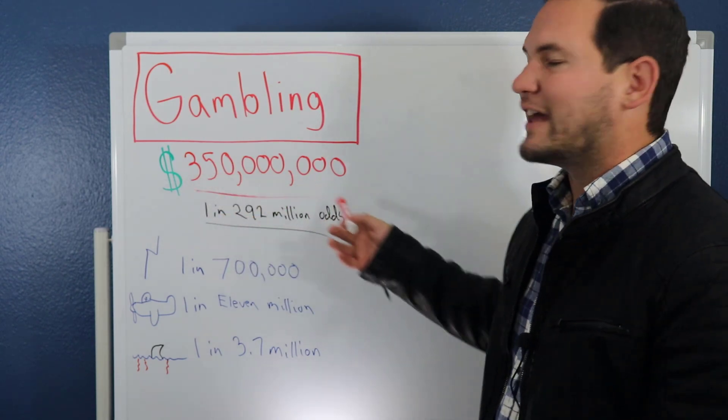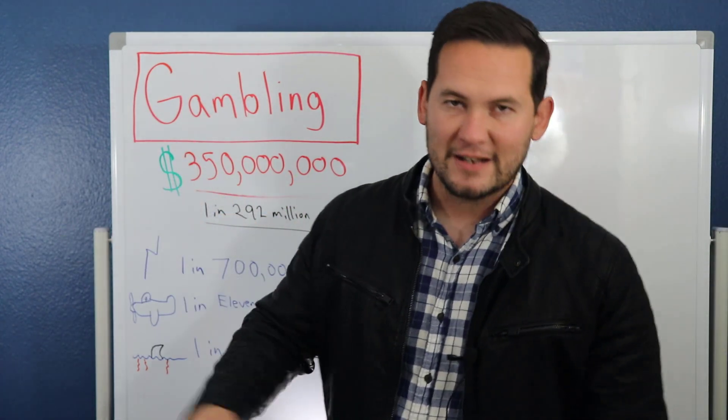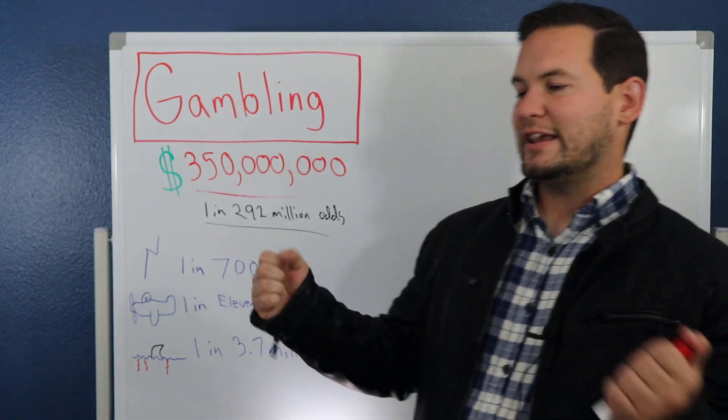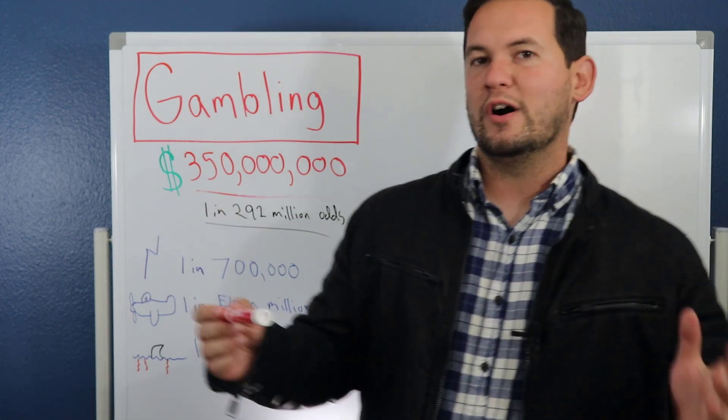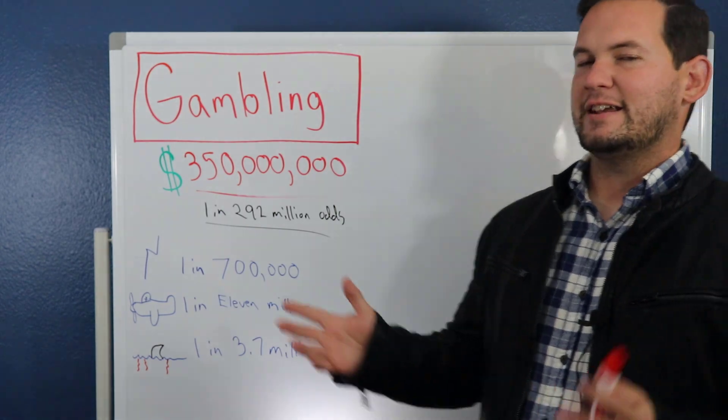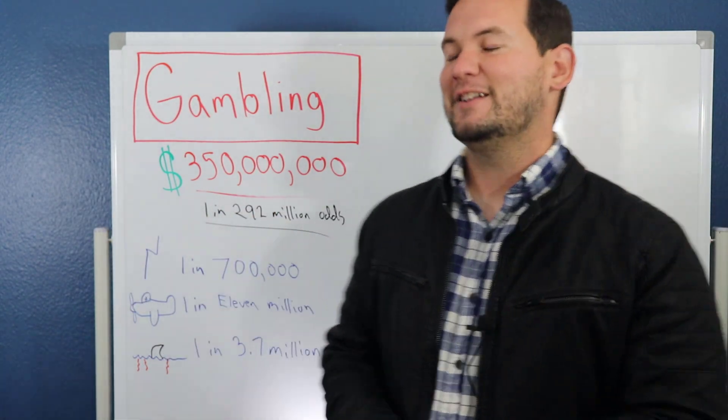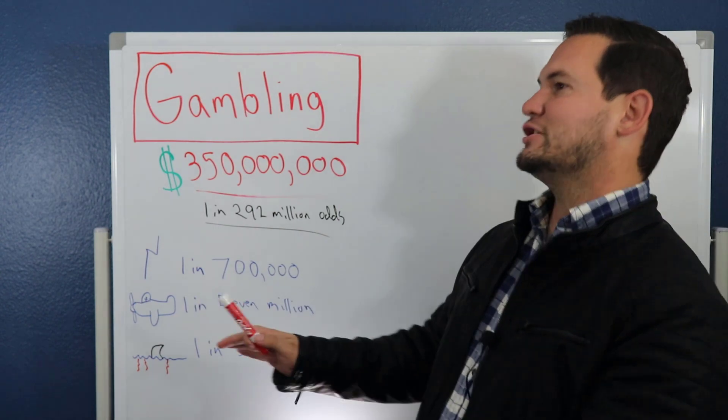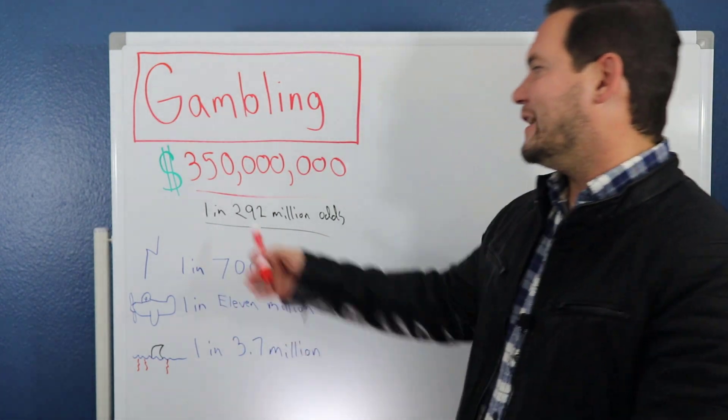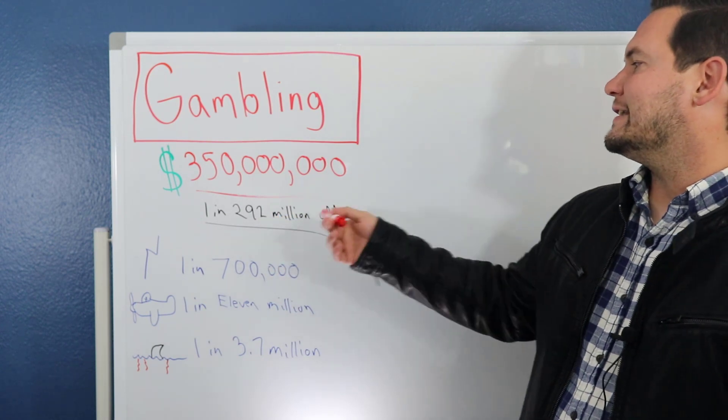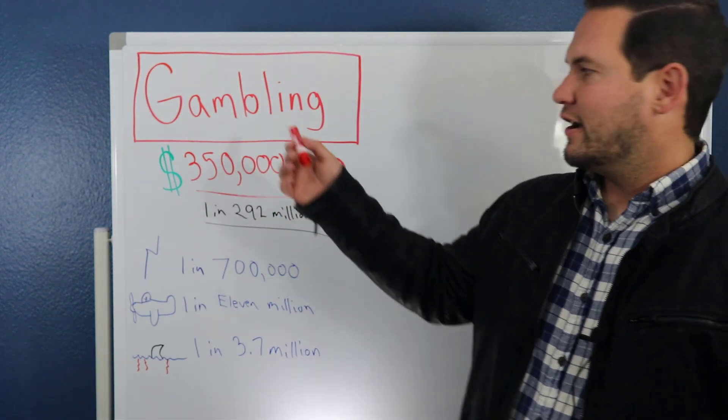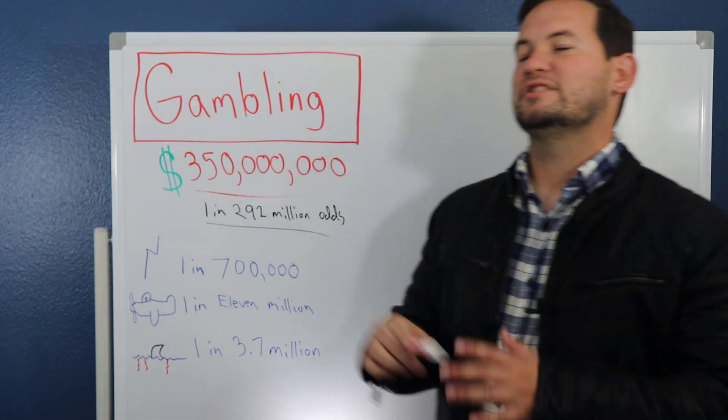Recently there was a $350 million jackpot and a lot of my friends were asking, 'Hey, you want to get in on this pool?' They were all pooling their money to buy a bunch of tickets, and if they won then they'd all split the prize. I said heck no, I don't want anything to do with that, because it's just stupid. You have like no chance of ever winning the lotto. In fact, for this specific lotto you had a 1 in 292 million odd chance of winning that lotto, so it's just not going to happen.